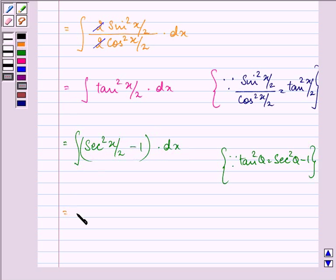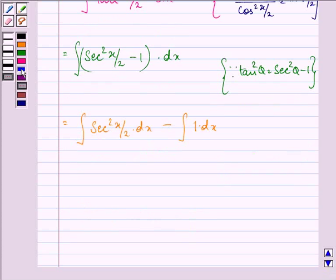Further, this can be written as integral of secant square x by 2 into dx minus integral of 1 into dx, that is further equal to tan x by 2 divided by 1 by 2 minus x plus c.